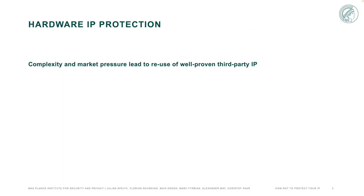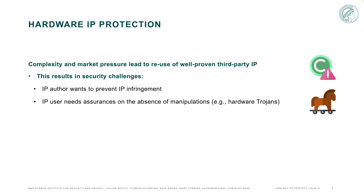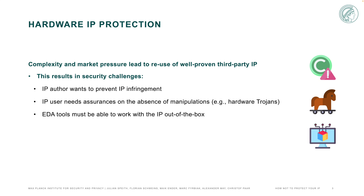Complexity and market pressure lead to a reuse of well-proven third-party IP in modern hardware design. This results in three key security challenges. While IP authors want to protect against IP infringement, IP users need assurances on the absence of manipulations such as hardware trojans. Furthermore, EDA tools must be able to operate on the plaintext IP.